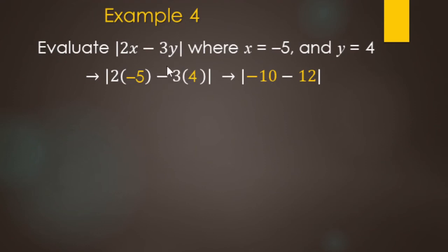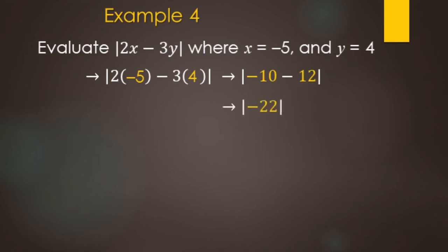Inside the absolute value, we've done multiplication, so now we do addition and subtraction: negative 10 minus 12. Think of it like money — you have to pay 10 and you have to pay 12, so the total you have to pay is 22. So the absolute value of negative 22 equals positive 22.